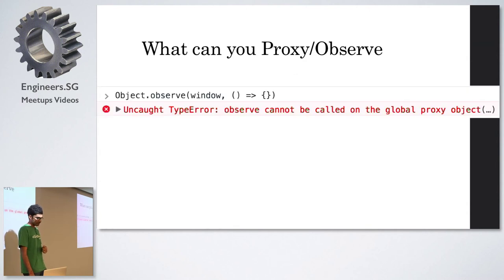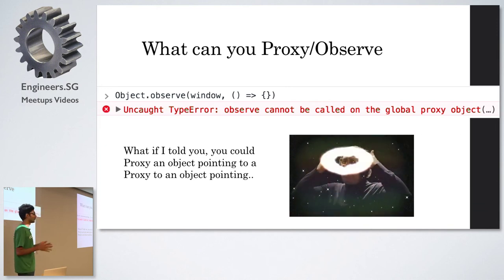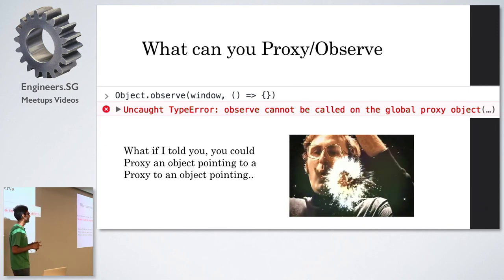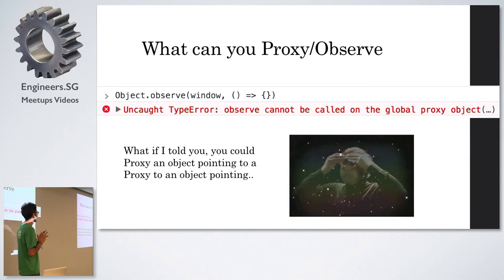One thing is that you can't observe the window, any global object using object.observe. So that's just one caveat that's there. But in proxy, you can pretty much observe, you can proxy almost any object that's there. You can even proxy an object which is a proxy to another object is a proxy to another object and so on. So it's pretty interesting if you actually think about it. There's some neat stuff that you can do.